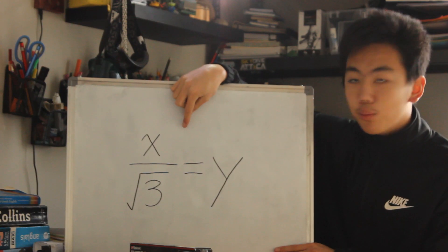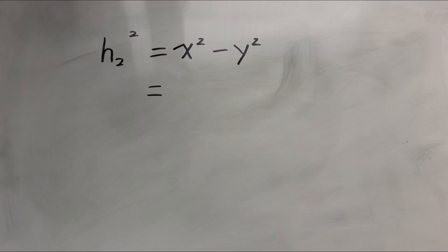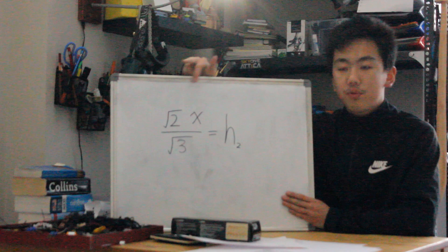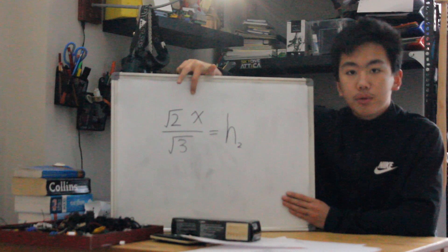Now we put the modified y back into the equation. Now we've substituted the second height and we put it back into the equation.